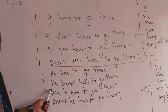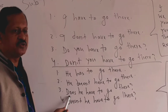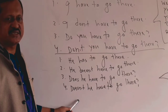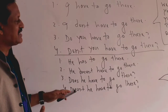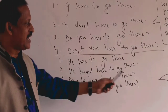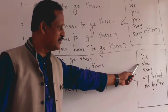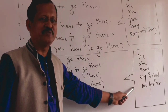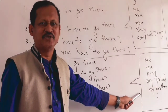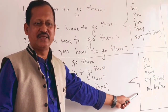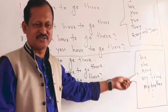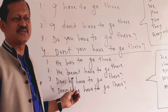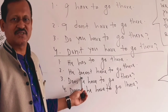Interrogative with 'he': 'Does he have to go there?' Negative interrogative: 'Doesn't he have to go there?' Similarly for 'she': 'She has to go there' — she is obligated to go there. 'She doesn't have to go there.' 'Does she have to go there?'